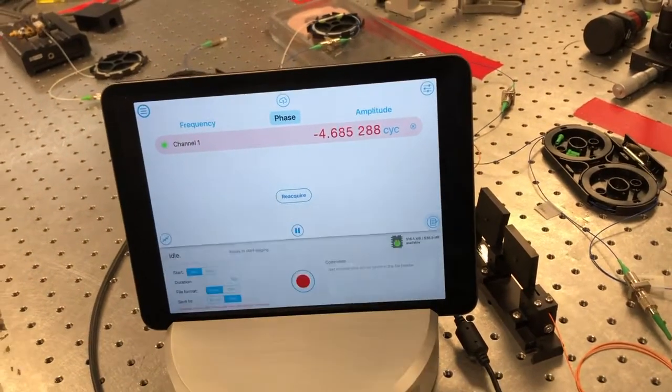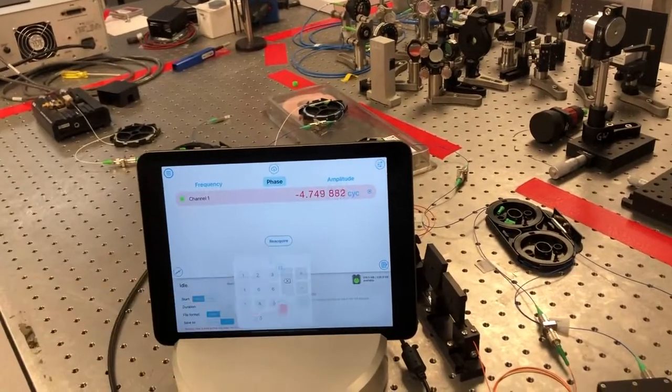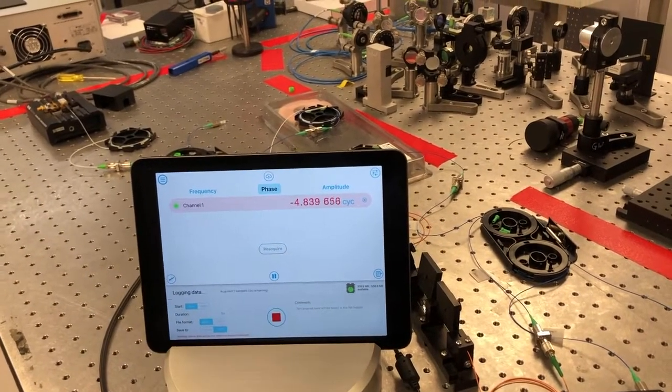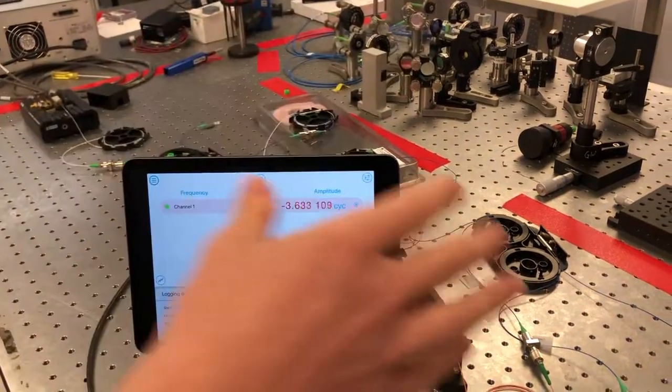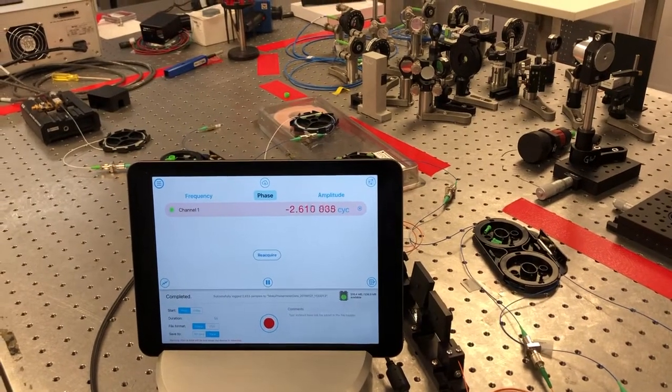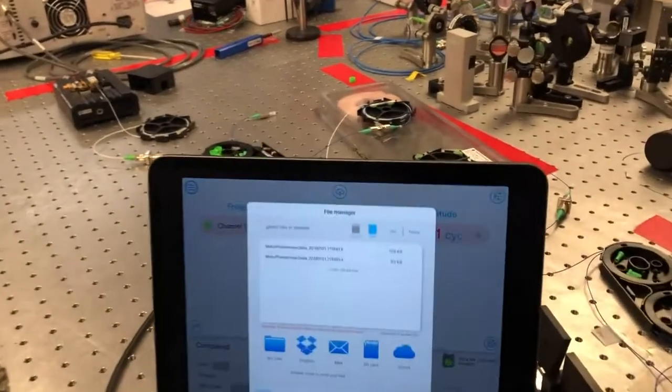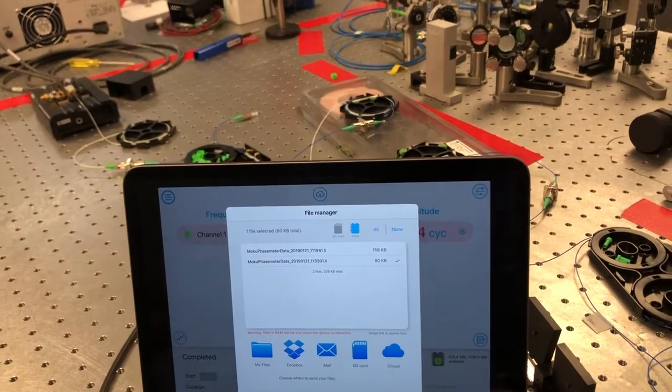What I can do is essentially set up a measurement for, I'm going to say, five seconds. I'm going to save it to RAM on the actual device, and then we'll hit go. And what this is going to do is record the phase difference between these two arms in the interferometer for five seconds. And then once I'm done with it, I can click this icon up here, and then take that data and export it to, in my case, Dropbox.